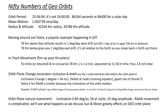Orbit plane change has some cool numbers. Remember, inclination and right ascension of the ascending node (RAAN) are the two orbit elements that define the orbit plane. Inclination change — changing the tilt of the orbit — requires 54 meters per second delta-V. You perform that delta-V at the node when you're crossing the equator, northbound or southbound. 54 meters per second is a good rule of thumb.